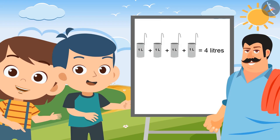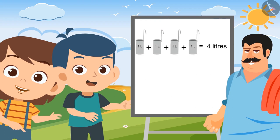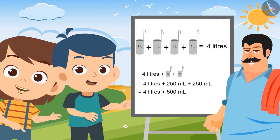I will use the 1 litre container 4 times to measure 4 litres of milk, and the 500 ml container to measure the remaining half a litre of milk. Let me tell you another way. You can also measure 4 and a half litres of milk by using the 1 litre container 4 times and the 250 ml container 2 times.